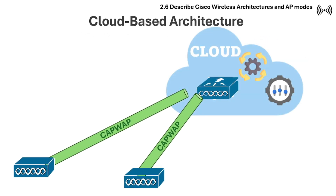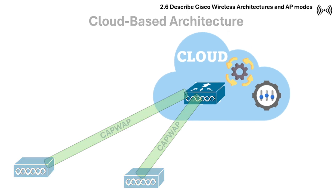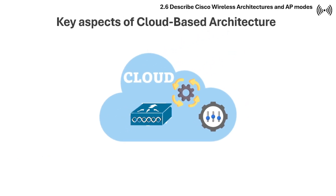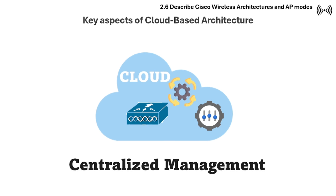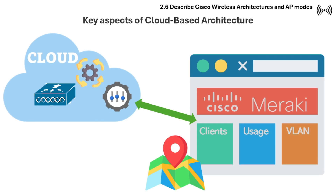Cloud-based wireless architecture refers to a wireless network infrastructure where the management and control plane of the network are hosted in the cloud rather than on on-premise hardware controllers. The first key aspect is centralized management: a cloud-based controller is accessible via a web interface and provides a single point of management for all access points regardless of their physical location.